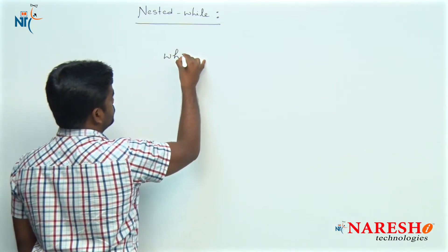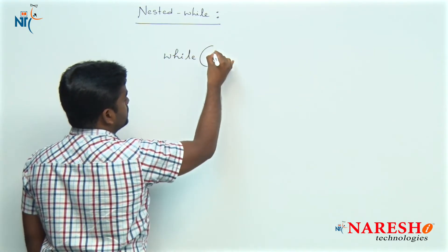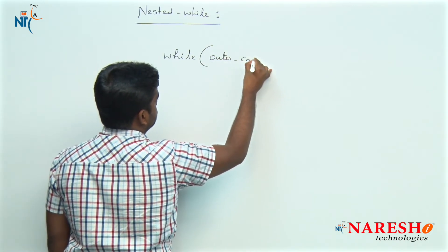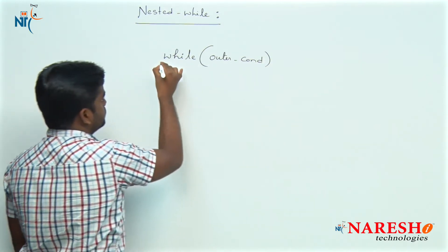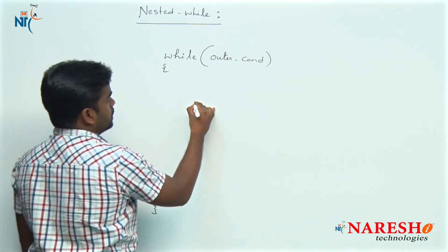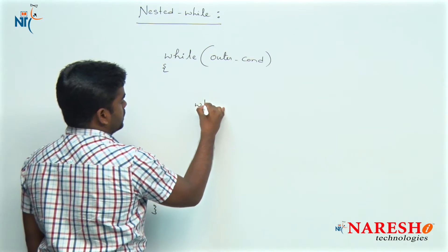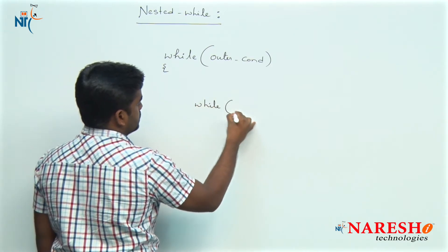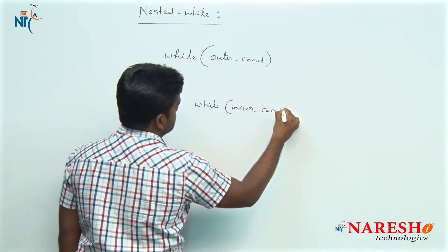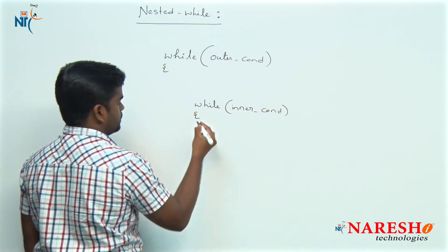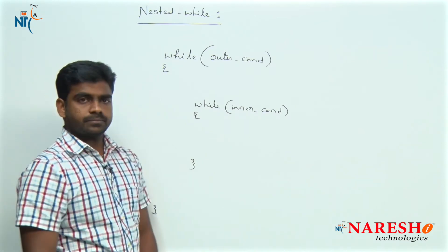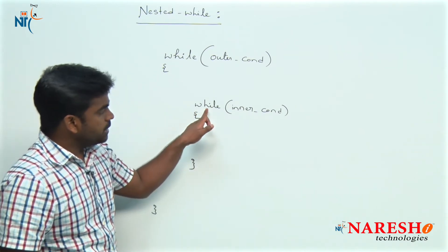This is the outer while loop with an outer condition. Inside this while loop we are writing one more while loop — this is the inner loop. Here we are defining the inner condition inside the inner while loop.